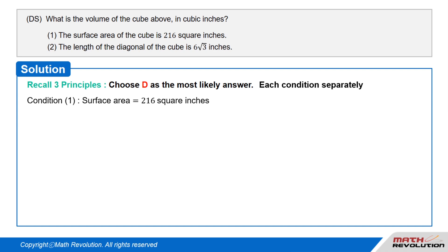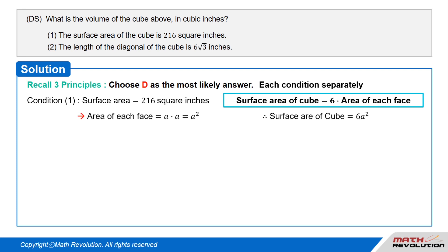Let's take a look at each condition separately to see how this works. Condition 1 tells us that the surface area of the cube is 216 square inches. As the surface area of a cube is 6 times the area of each face, area of each face equals A times A equals A squared. Surface area equals 6 times A squared. Putting this into equations, we get 6 times A squared equals 216.